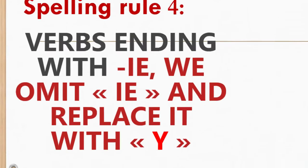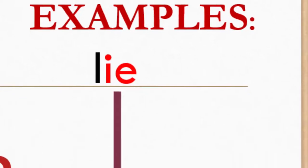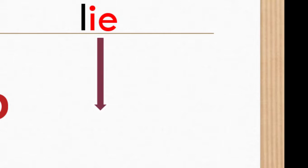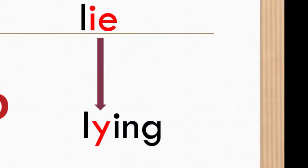Spelling rule number four: verbs ending with ie, we omit ie and replace it with y. Example: lie. The last two letters are i and e, so we omit the i and e and replace it with y, then we add ing.